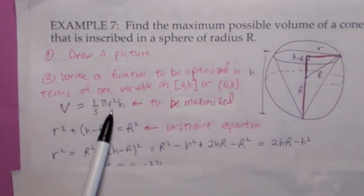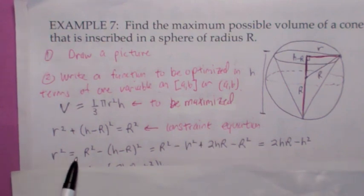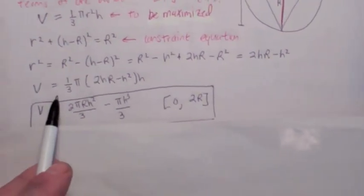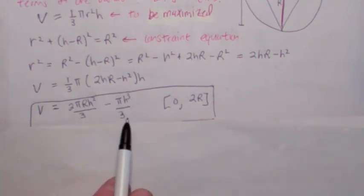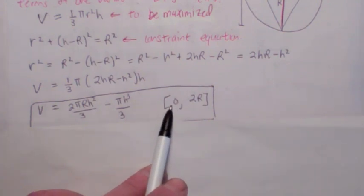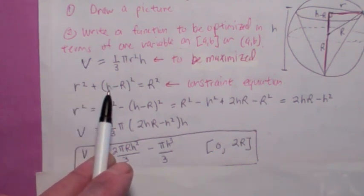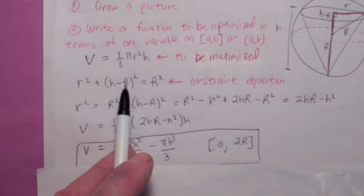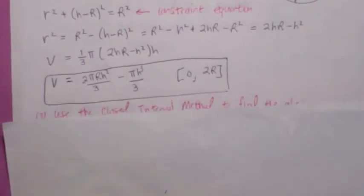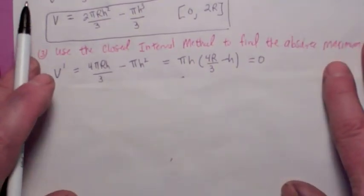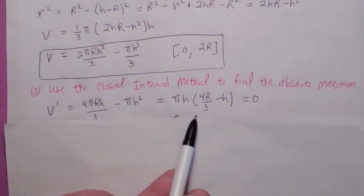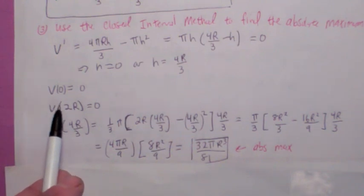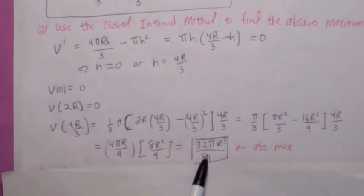It's better to solve for r squared directly. Solving gives r squared equals 2hR minus h squared. Plugging into the volume of the cone formula gives the volume as a function of h alone. This is a closed interval problem: h ranges from zero to 2R — at both endpoints the cone has zero volume. Taking the derivative of V, setting equal to zero, and factoring gives h equals zero or h equals 4R over three. Evaluating V at zero, 2R, and 4R over three, the absolute maximum volume occurs at h equals 4R over three, and that is the answer.